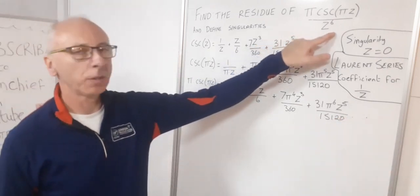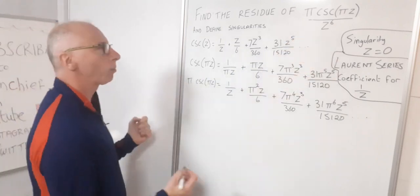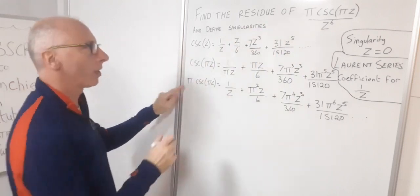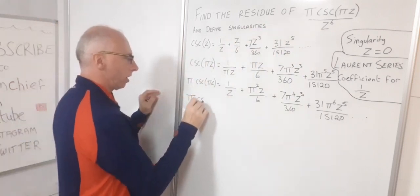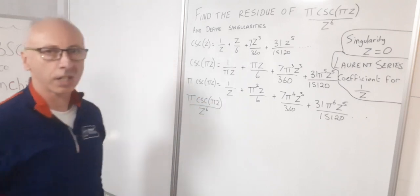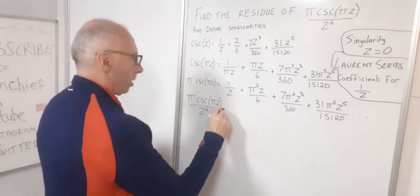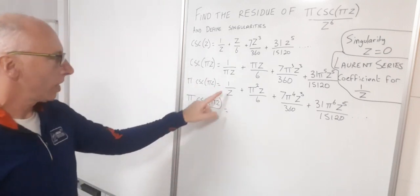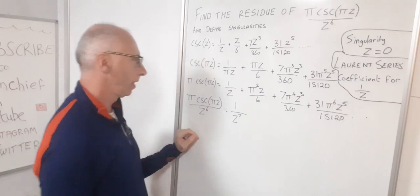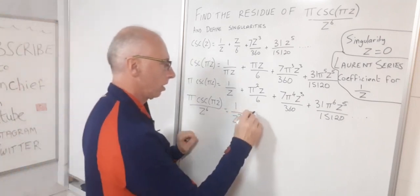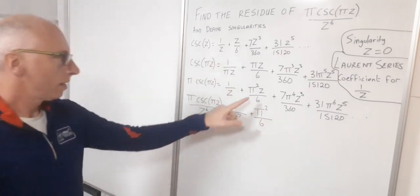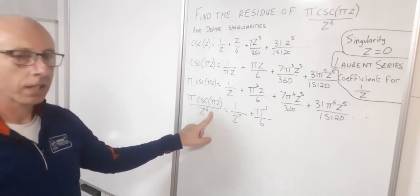Okay, so now the final bit we need to do is over z to the 6. So that's what we need to find the residue of. So now all we do is take what we've got so far and divide it by z⁶. So 1/z divided by z⁶ is 1/z⁷. This one here is going to give us π²/6. And then z divided by z⁶ is going to give me 1/z⁵.